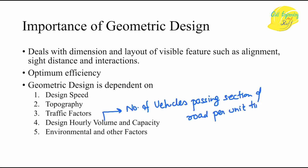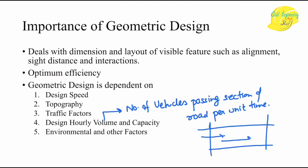Traffic volume is the total number of vehicles passing a section per unit time — for example, per one hour. This comes under traffic survey: we find out the number of vehicles passing in a unit time and assess the overall requirement of the area — whether the road should be multi-lane or single lane, what type of vehicles are passing — and based on that, the overall width of the pavement is decided.